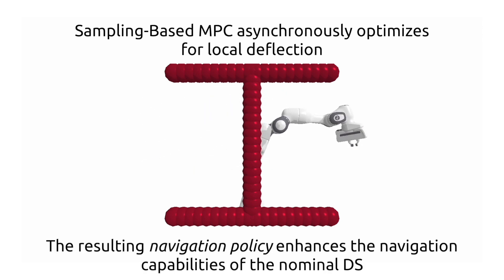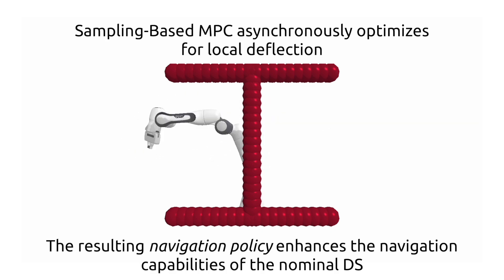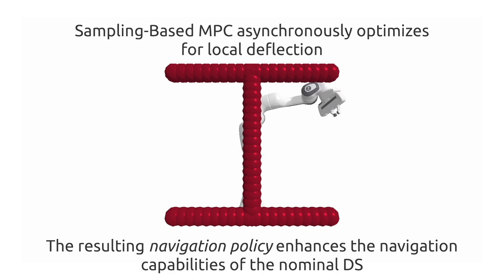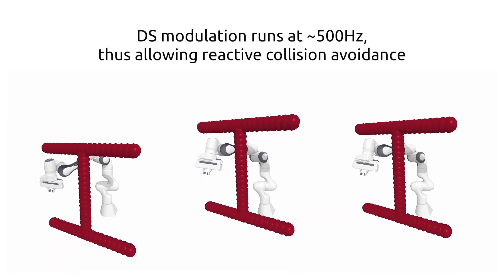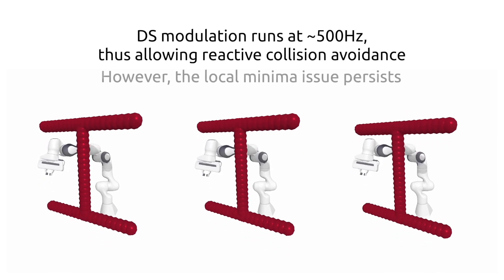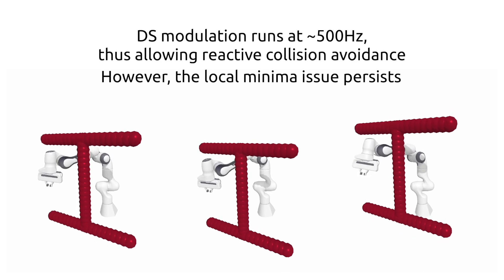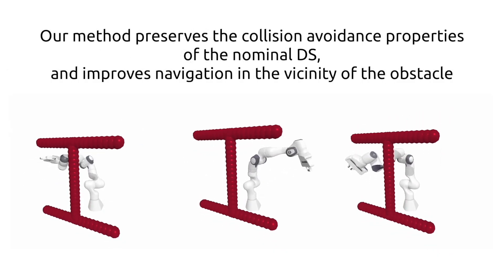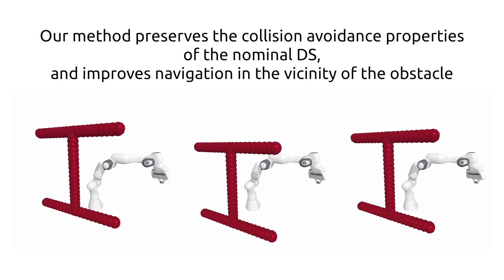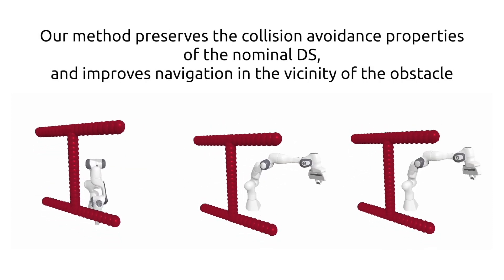The parameter of this deflection is optimized at runtime with sampling-based model predictive control. Modulated dynamical systems can be evaluated at frequencies up to 500 Hz. This allows obstacle avoidance even for the case of swiftly moving obstacles. As a result our method can be applied for situations of non-static environments while still addressing the local minima issues of modulated dynamical systems.